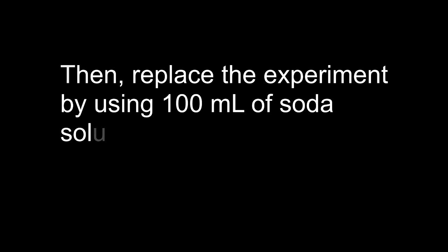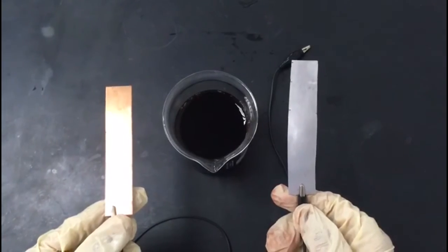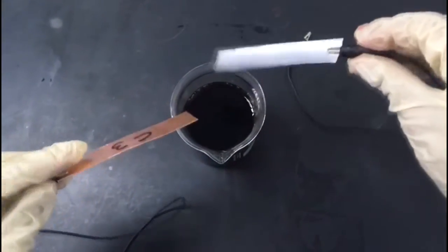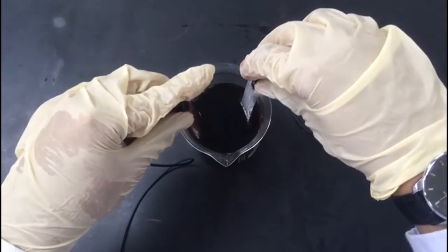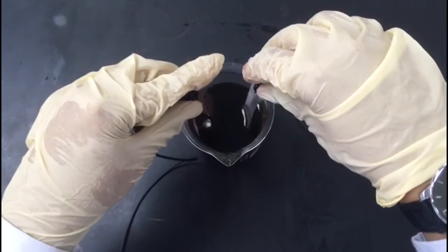Then, replace the experiment by using 100 ml of soda solution. First, dip 8 cm of copper strip and 8 cm of aluminum strip in the soda solution.